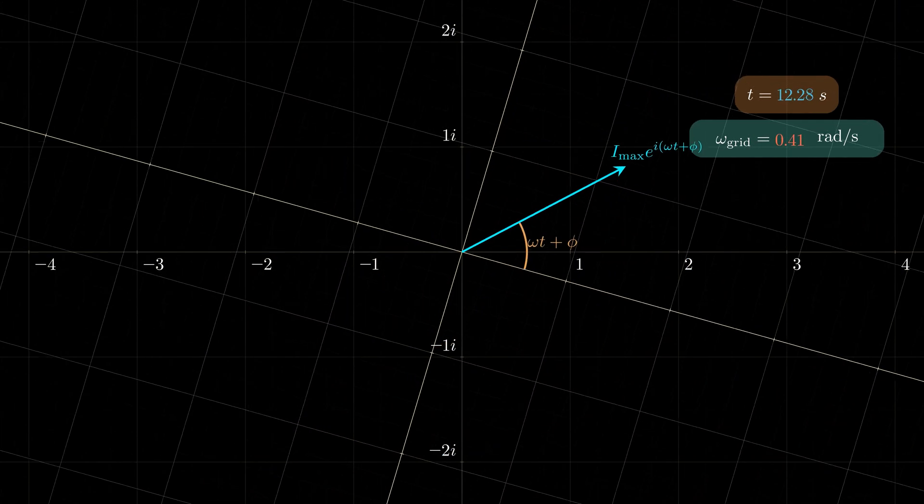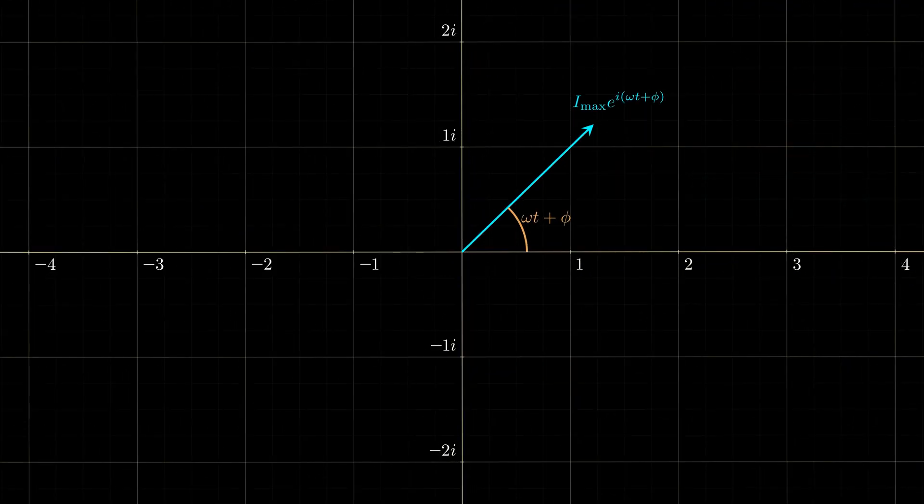Let's stop rotating now. The angle in this new grid is now simply phi. We got rid of the time dependency. Isn't that great? This vector here is what we call phasor.